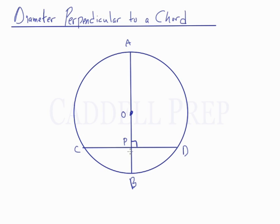When a diameter and a chord intersect, the diameter bisects the chord. So CP is going to be the same length as PD. Notice that the chord does not necessarily bisect the diameter — AP is much longer than PB — but the chord is split in half. CP is the same length as PD.